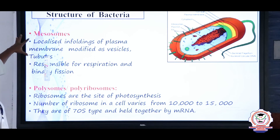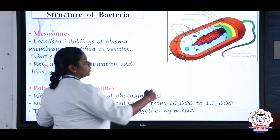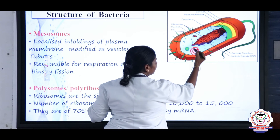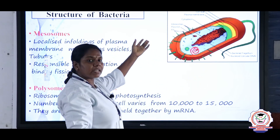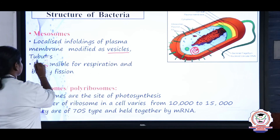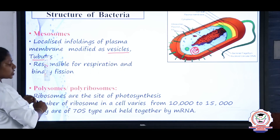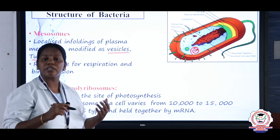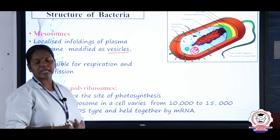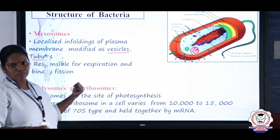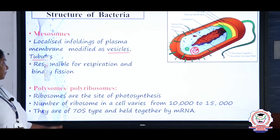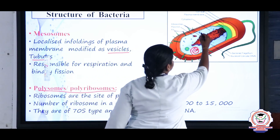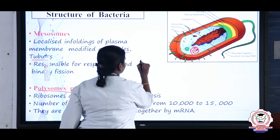Mesosomes are small structures attached to the plasma membrane. They later get modified into vesicles and tubules. Mesosomes are responsible for respiration and binary fission — bacteria respire through mesosomes, and binary fission, the splitting into two for reproduction, also occurs due to mesosomes. Polysomes (polyribosomes) and ribosomes are also present.